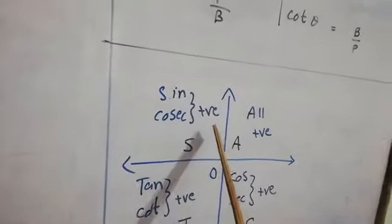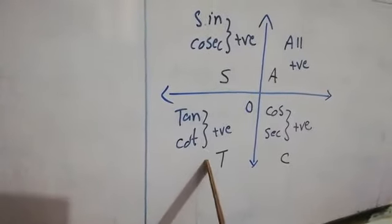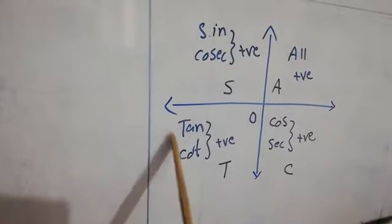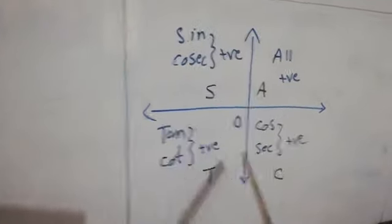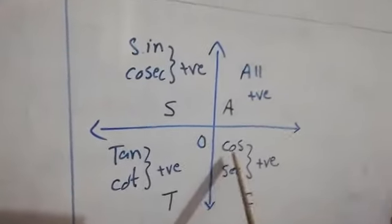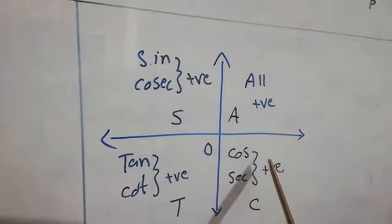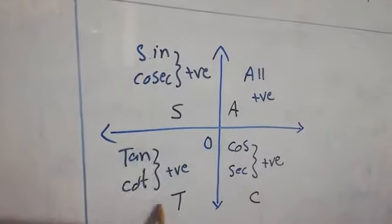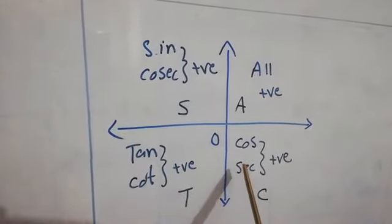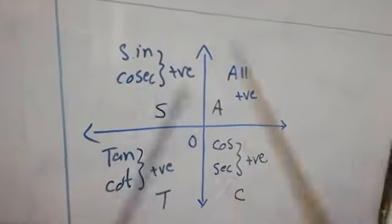In the third quadrant, T stands for tangent and cot theta, which are positive, while sin, cos, secant, and cosecant are negative. In the fourth quadrant, cos and secant theta are positive, and sin, cosecant, tangent, and cot are negative. This is a very important concept — it helps us to solve questions. Now we move to question number eight.